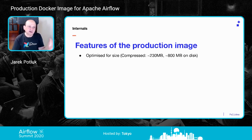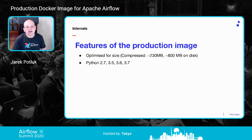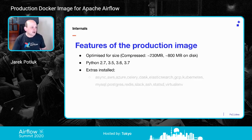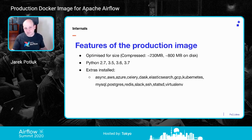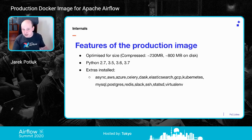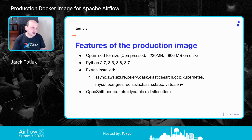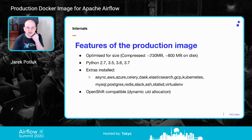Features of the production image: about 230 megabytes compressed in master, 210 in 1.10, and around 800 megabytes on disk when uncompressed. It supports Python 2.7, 3.5, 3.6, 3.7, and in master also 3.8. By default it installs a representative set of optional extras — you can install your own extras as well. The binary image we release contains those predefined extras. It's also made OpenShift-compatible, meaning it can run with any user ID, since OpenShift can generate a random user ID.